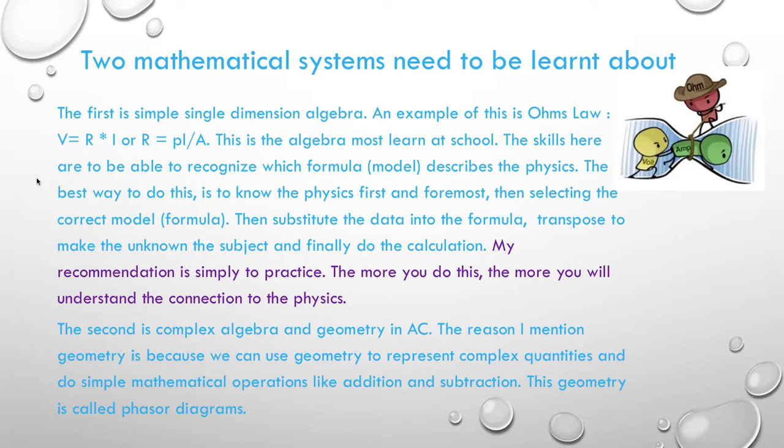So there are two mathematical systems that we need to learn about. The first is simple single dimension algebra. This is the stuff that everybody is supposed to do at school. An example of this is Ohm's law. Volts equals the resistance multiplied by the current. Or V equals R times I. Or R is equal to PL divided by A. This is the algebra most of us learn at school. The skills here are to be able to recognise the formula, the model, that describes the physics. The best way to do this is to know the physics first and foremost. Then selecting the correct model or formula becomes pretty easy and obvious. Then substitute the data into the formula, transpose to make the unknown the subject of the formula and finally do the calculation.